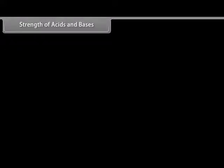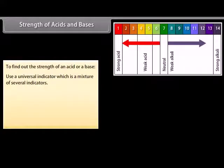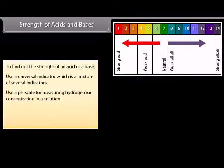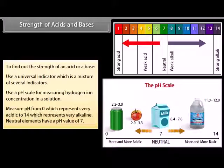You need to use a universal indicator to find the amounts of ions present in a solution, or to find out how strong an acid or base is. The universal indicator is a mixture of several indicators that shows different colors at different concentrations of hydrogen ions. A pH scale is a scale for measuring hydrogen ion concentration in a solution — you can measure pH from 0, which represents very acidic, to 14, which represents very alkaline. Neutral elements have a pH value of 7.